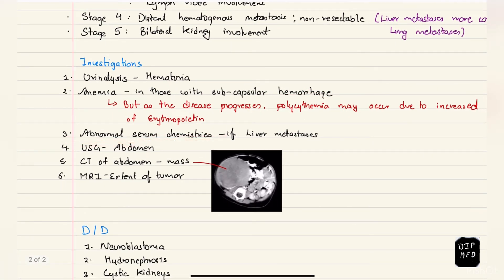Abnormal serum chemistries if there is liver metastasis. Ultrasound shows abdominal mass. CT scan shows mass on the abdomen. And MRI is done to know the extent of the tumor.